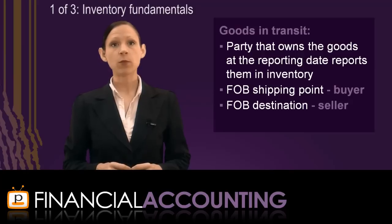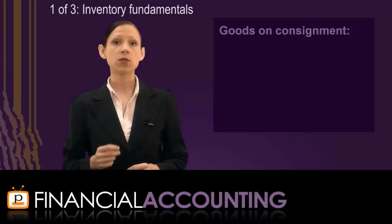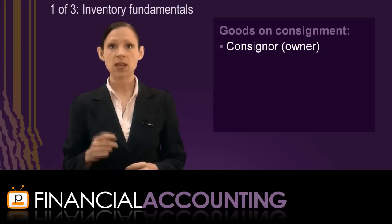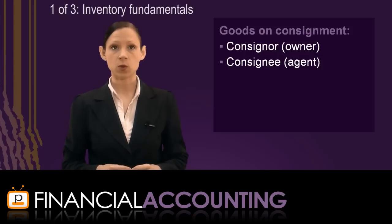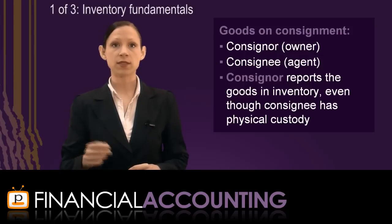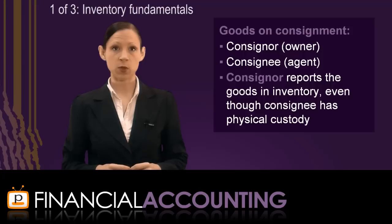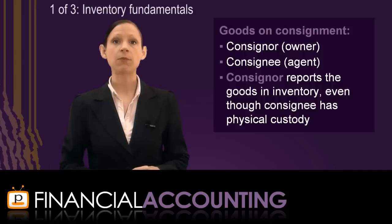The second case where it may not be clear as to who reports the goods as part of their inventory is for goods on consignment, where the owner, called the consigner, ships the goods to the consignee to sell the goods on their behalf. It is the consigner who still has ownership of the goods and reports them as part of their inventory, even though the consignee may have physical custody of the goods.